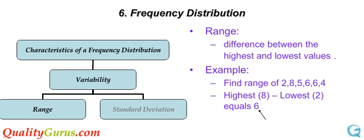The range is the most obvious measure of dispersion and is the difference between the lowest and highest values in a data set. In the example shown on this slide, the highest number is 8 and the lowest number is 2. So the range is 8 minus 2, and that is 6.